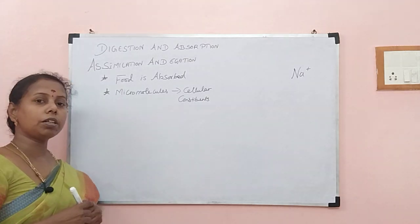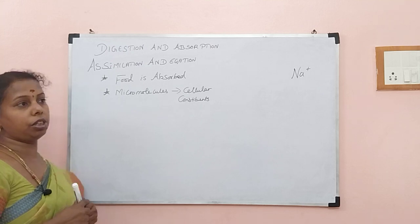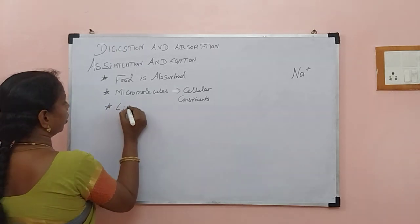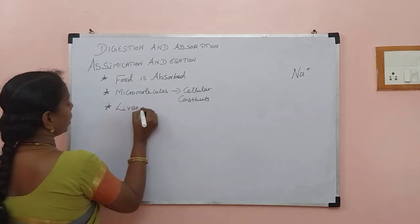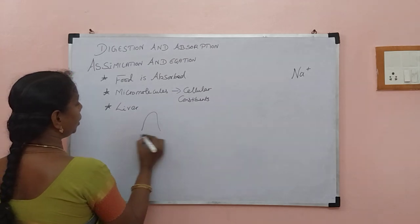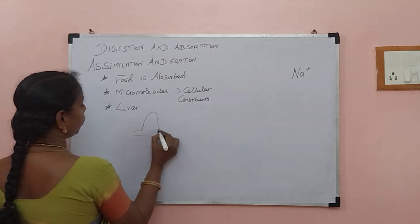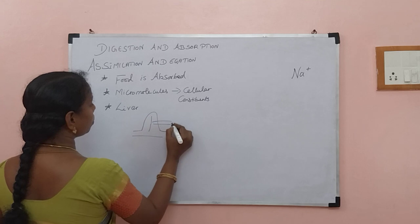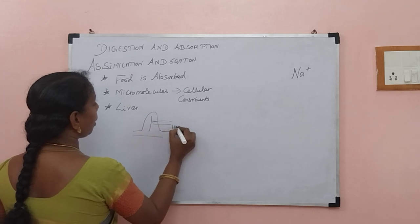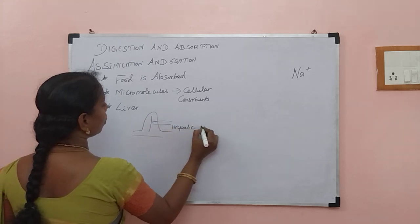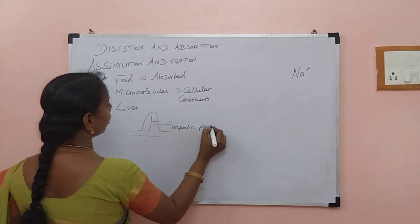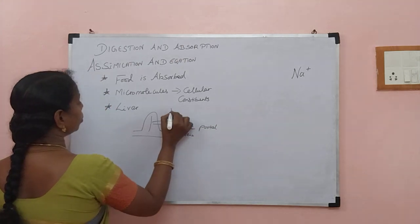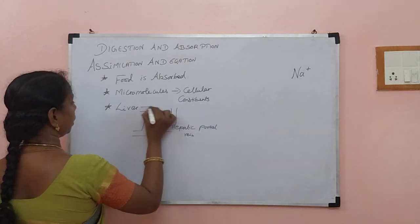What is the principal organ of assimilation? The liver is the principal organ for assimilation. From the villi, if you remember, we have capillaries. It goes via the hepatic portal vein, and through that it reaches the liver.